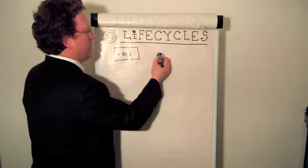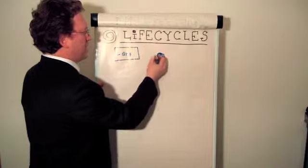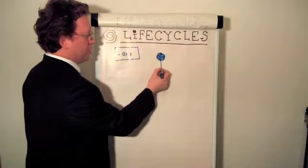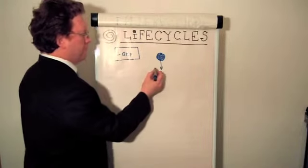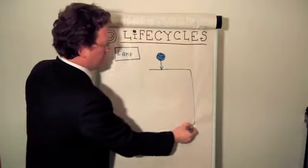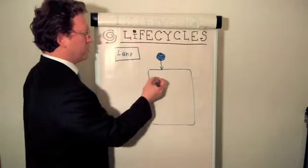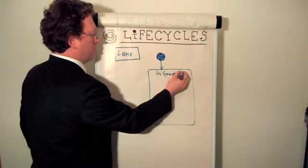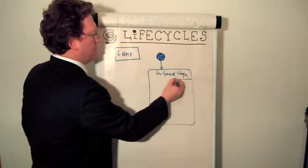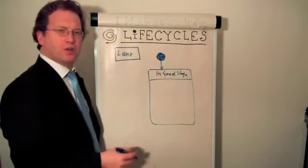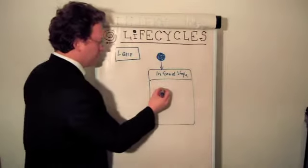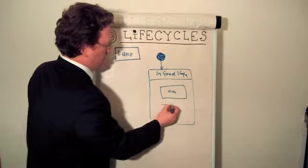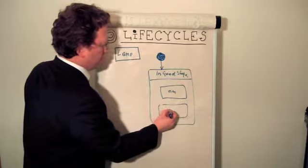To indicate that there is no lamp we just use this black dot. Then we can have a transition from one black dot to one state, I would say in good shape. And when the lamp is in good shape it could either be on or off. So I could have here on or I could have another state which would be off.